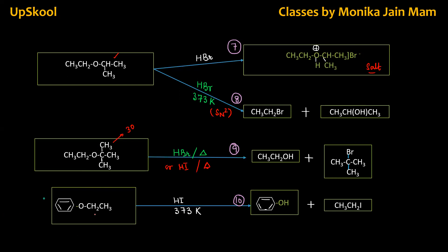If you have ether, one side aromatic, one side aliphatic, and you add HI or HBr and heat at 373 Kelvin, then the product will always cleave here because there is a double bond. So you get phenol and iodoethane.